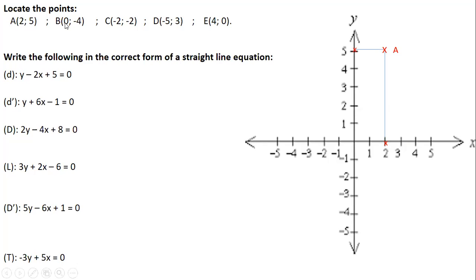Point B is (0, -4). We have a very important rule: any point having an abscissa of 0 will be located on the ordinate axis, or y-axis. So B has abscissa 0, and ordinate minus 4, which is downward. I mark x at minus 4 and that is point B on the y-axis.